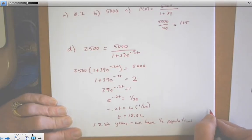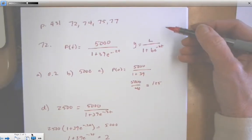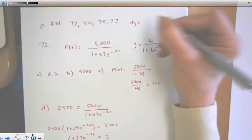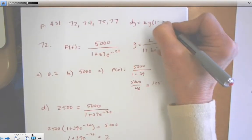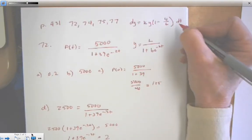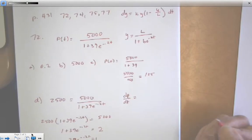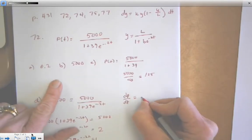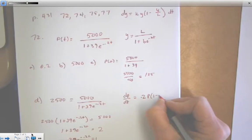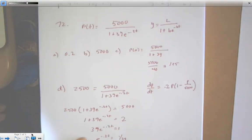The last one asks for a differential equation. So we know that this is solution form, and we have that solution form. The differential equation is DY equals KY times 1 minus Y over L. I'm going to put my DT on this side. So DP over DT equals K, we know, is 0.2, times P times 1 minus P over 5,000. And that's our differential equation.